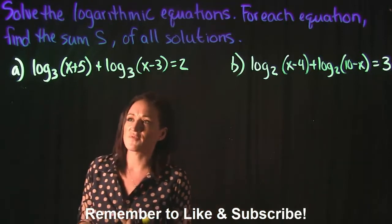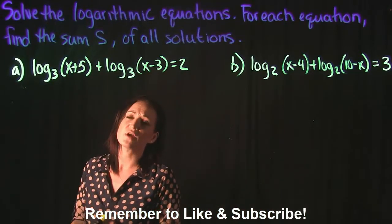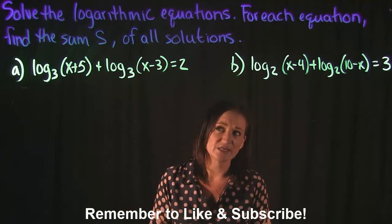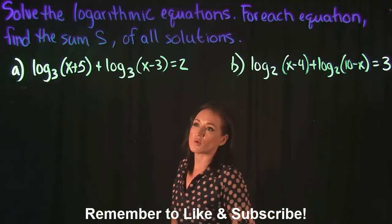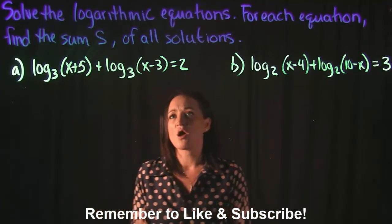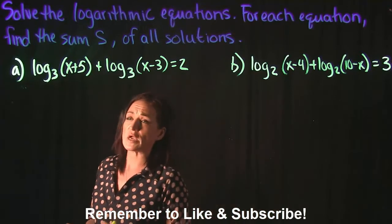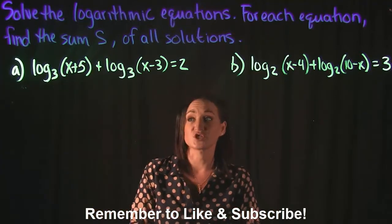Take a look at example A. We have log base 3 of x plus 5 plus log base 3 of x minus 3 is equal to 2. Typically we want our logs to be by itself on one side of the equation, which we already have, which is great.